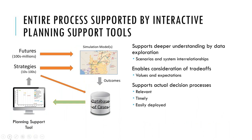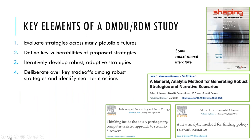These studies are supported by interactive planning support tools, recognizing that this kind of analysis can't be done by a single analyst in a back room — it really has to support a deliberative process. That means running models hundreds of thousands of times, developing large databases of cases, and then bringing that into interactive visualization software to support the conversations around the information. To summarize, the key elements of RDM are: evaluate strategies across many possible futures, define key vulnerabilities, iteratively develop robust and adaptive strategies, and use this information to inform deliberations over key trade-offs.